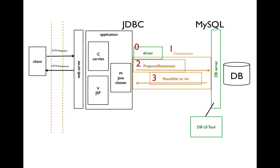In either case, we'll get a ResultSet or an int back to our application. The fourth step is to process those results — within our Java classes, servlet, or JSP. We'll either work through the ResultSet to do something with the data, or use the int to perhaps display a message showing how many records were affected. As we go through the videos, we'll see all of these things happening as we create examples for each item of the CRUD acronym implemented against our database.